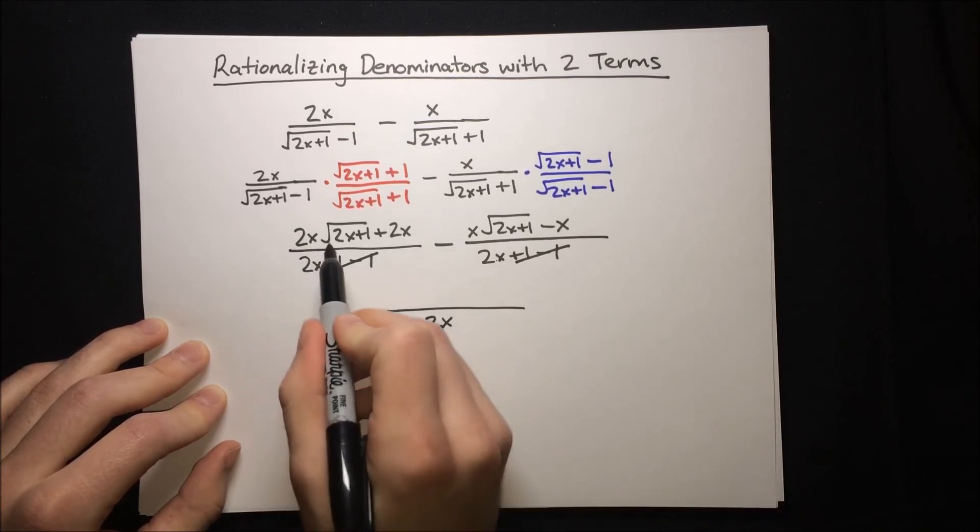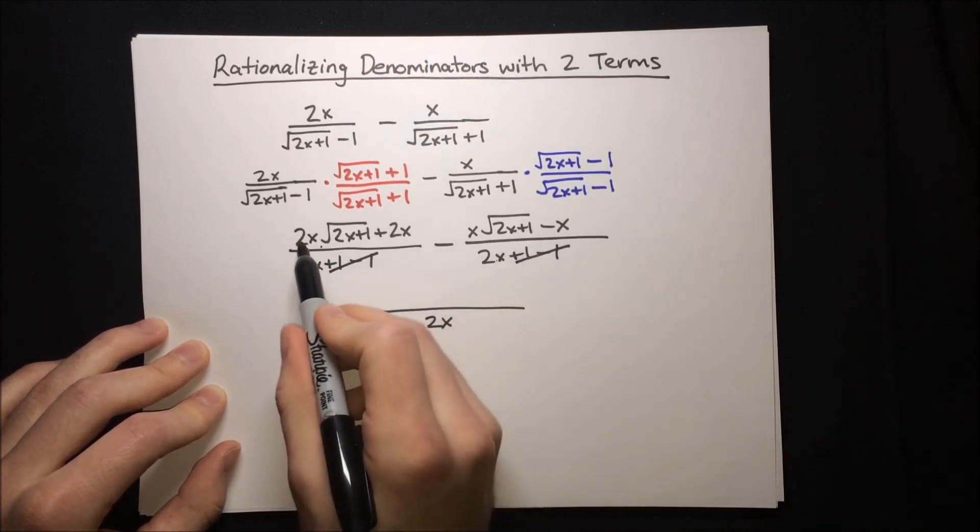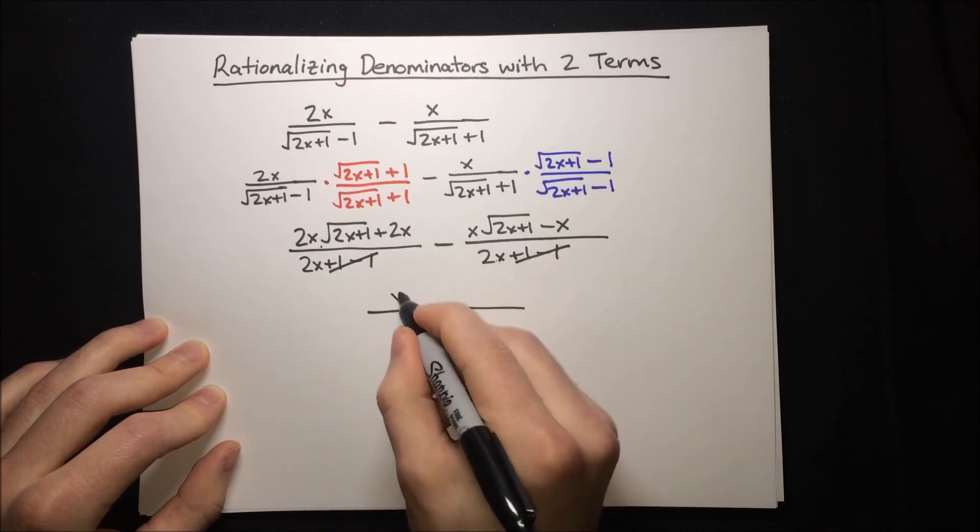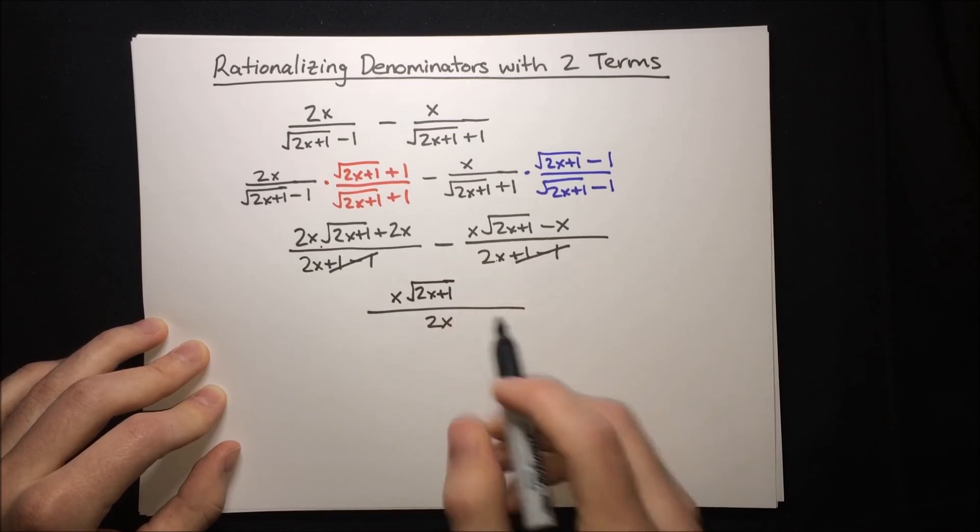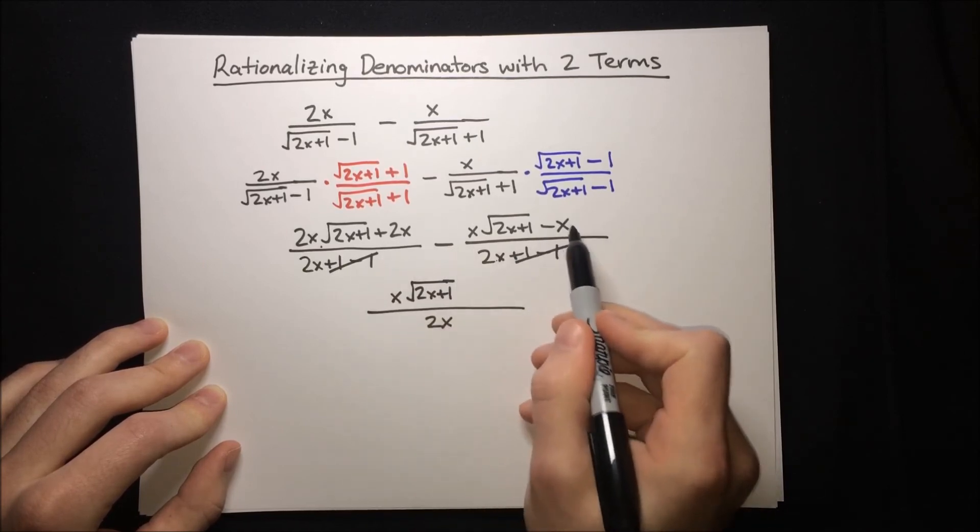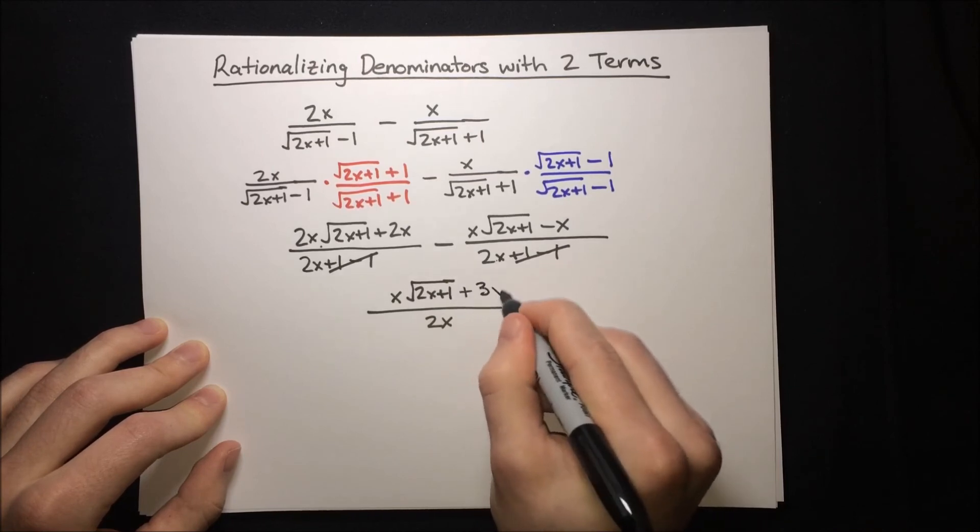So we've got 2x times the root minus x times the root, so that's like 2 minus 1, so just x times the root of 2x plus 1, and then 2x minus negative x. So that's really 2x plus x for plus 3x.